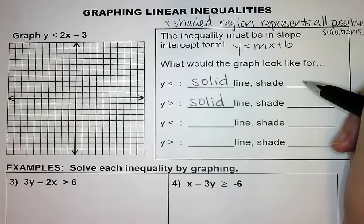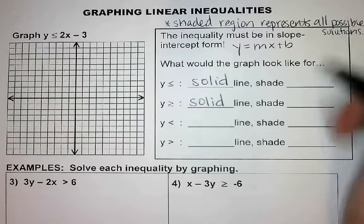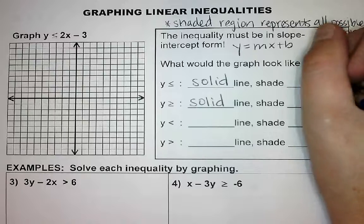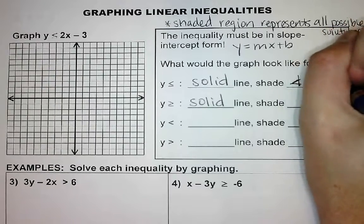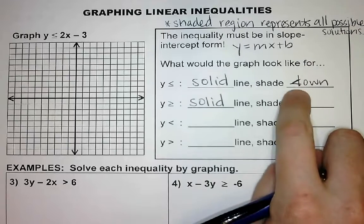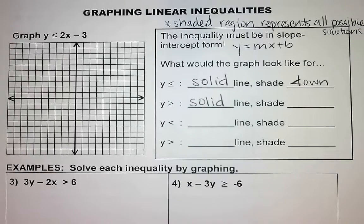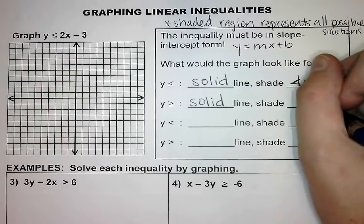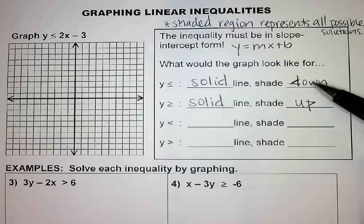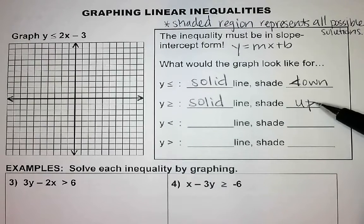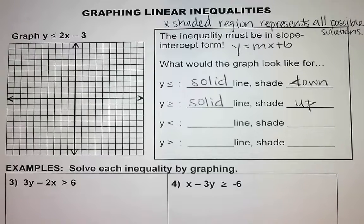If it's less than or equal to, we will shade down. I like it because the 'd' looks like the beginning of that less than sign. If it's greater than or equal to, then you will shade up. Think about if you can make a 'd' or a 'p.' If you can make a 'd,' you shade down. If you can make a 'p,' you shade up.